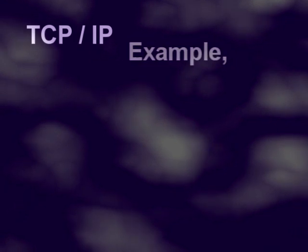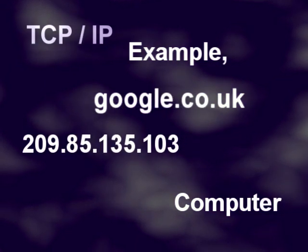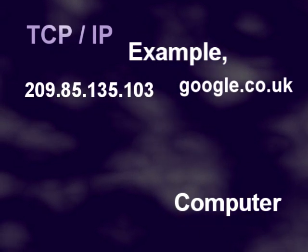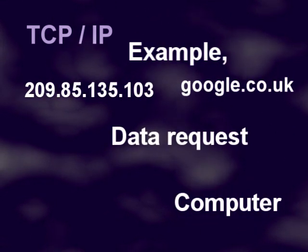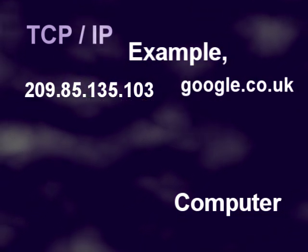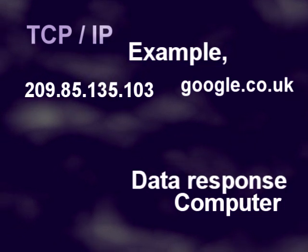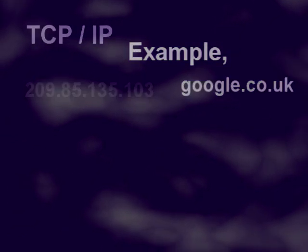For example, when you type google.co.uk into a browser, your computer will request the IP of google.co.uk. Then your computer will request the website data from that IP address using the address that was requested earlier. This is the destination address. The server will reply and send data back to your computer using the source address of the request packet.